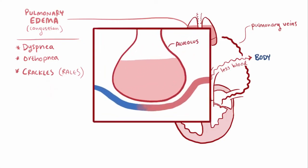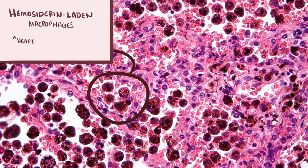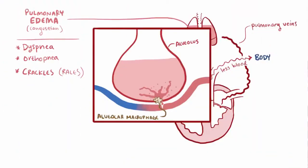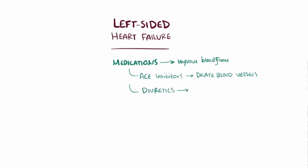If enough fluid fills some capillaries in the lungs, they can actually rupture, leaking blood into the alveoli. Alveolar macrophages then eat up these red blood cells, causing them to take on a brownish color from iron buildup. These are called hemosiderin-laden macrophages, also known as heart failure cells. For left-sided heart failure, certain medications can be prescribed to help improve blood flow, like ACE inhibitors which help dilate blood vessels, as well as diuretics to help reduce overall fluid buildup in the body, which helps prevent hypertension from worsening the heart failure.